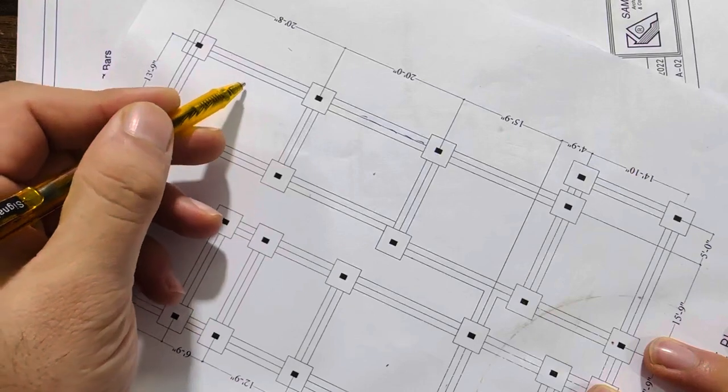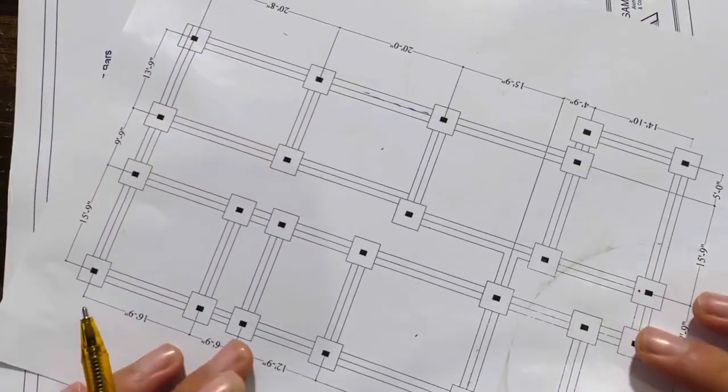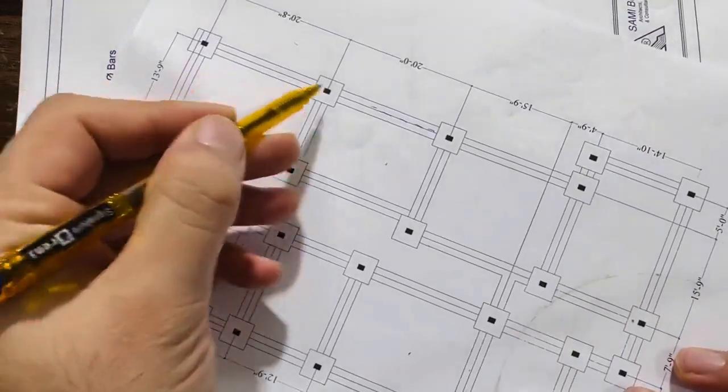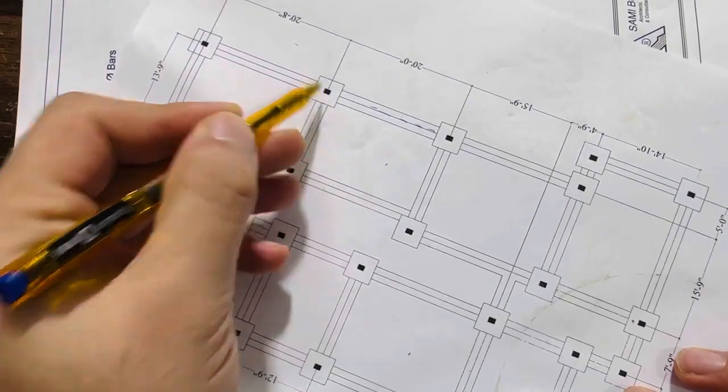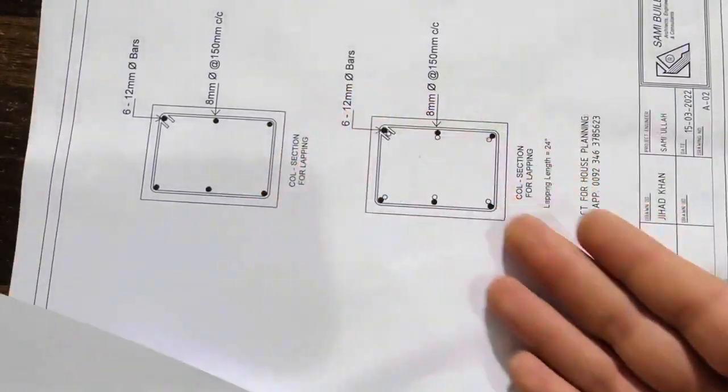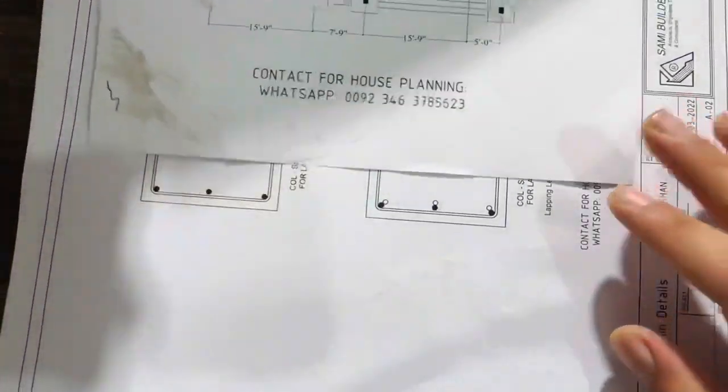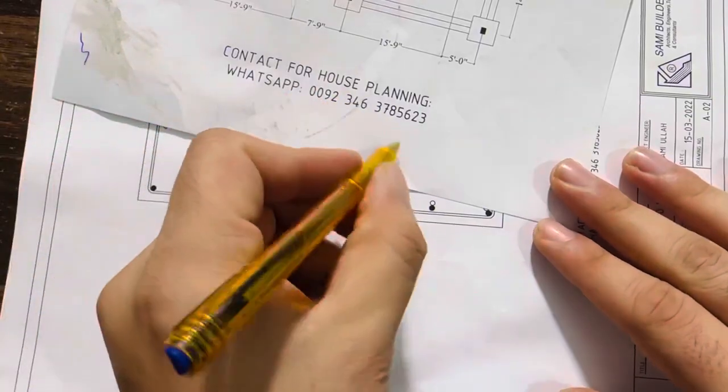This is a strip footing, and these two are fit footings. Inside this we have a column, and the column size you can see clearly in this structural design. If you need house planning, structural drawing, or 3D animation for any type of building, you can contact me on this WhatsApp number. This is a paid service, not for free.